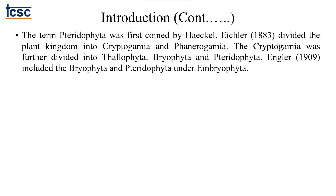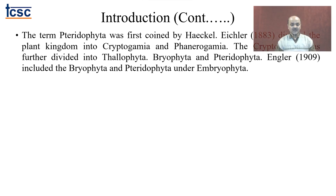Eichler in 1883 divided the plant kingdom into cryptogamia and phanerogamia. Cryptogamia was further divided into thallophyta, bryophyta and pteridophyta. Engler in 1909 included bryophyta and pteridophyta under embryophyta. Various people have worked on this, understood the evolutionary trends, and developed classification systems. In case of pteridophytes we usually follow the G.M. Smith classification, which we will discuss shortly.